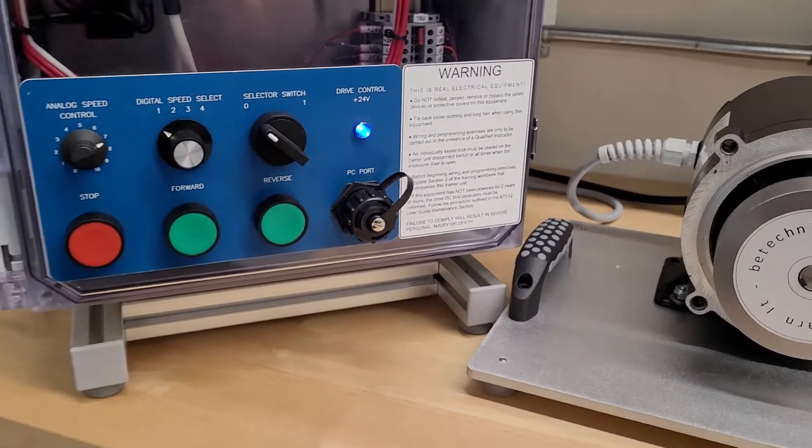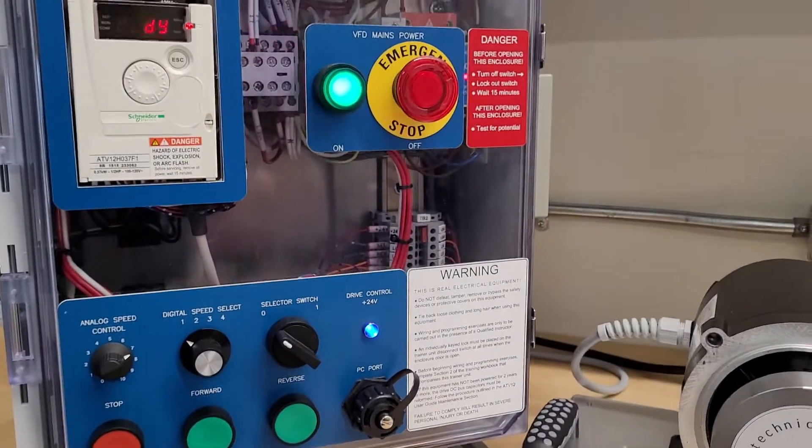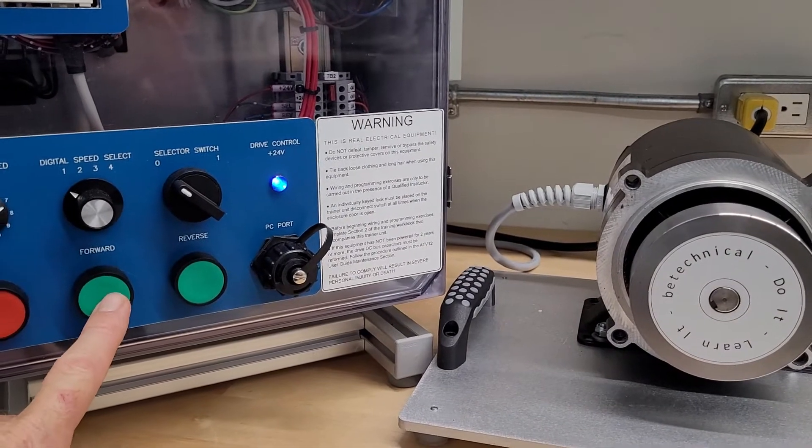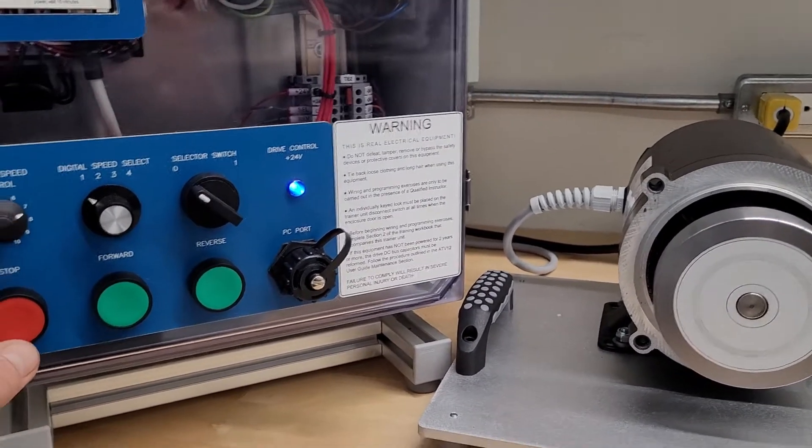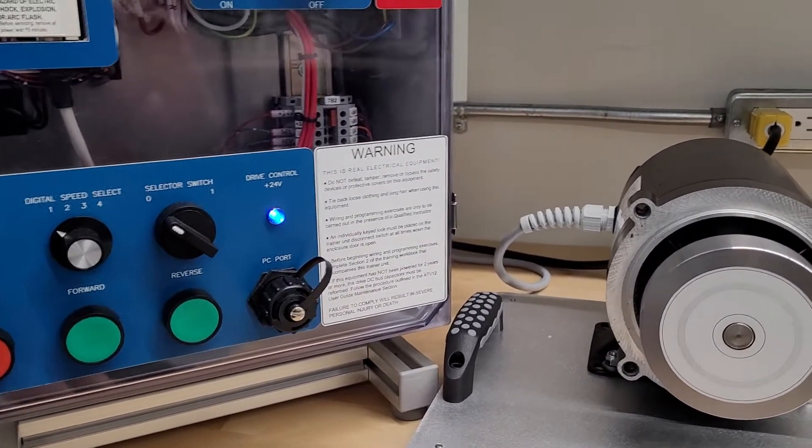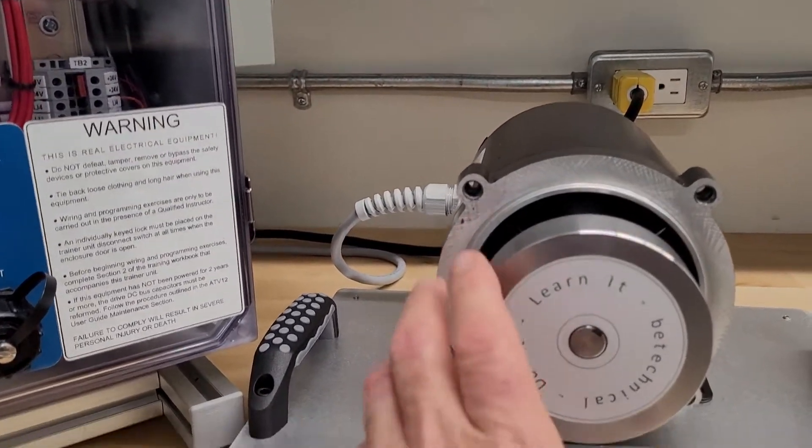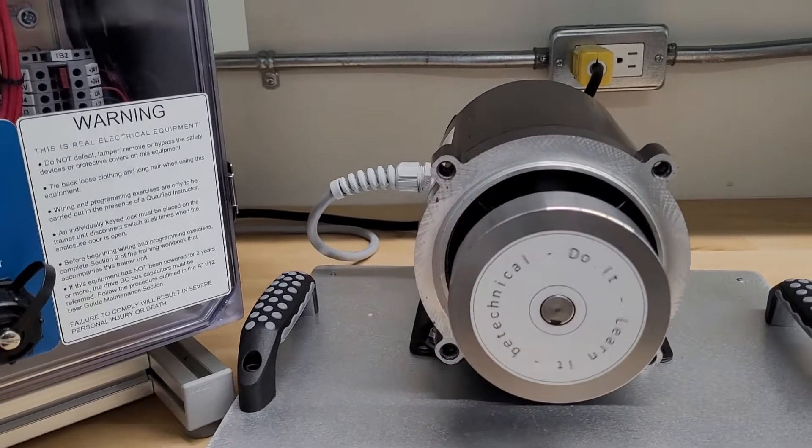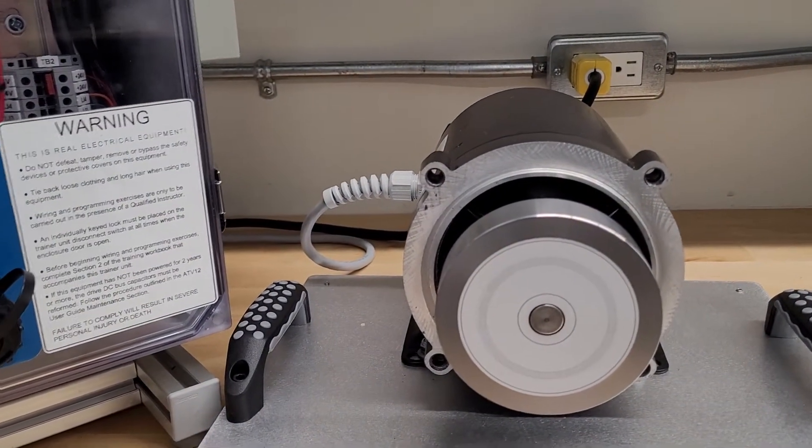So on this little ATV 12 drive I have one-third horsepower set up on three wire control. If I hit start and stop, got a two-second deceleration ramp, you'll notice I can just spin the rotor right. So it can freewheel. That works in either direction if I start and stop it.